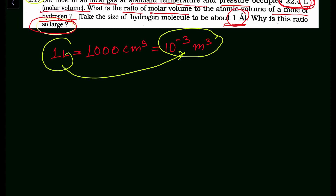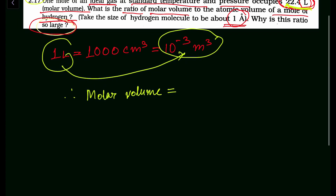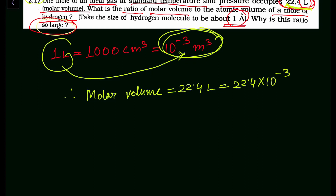We have to express the given molar volume of 22.4 liters in meter cube. Therefore, molar volume = 22.4 liters × 10⁻³, which gives us 22.4 × 10⁻³ meter cube. This is the molar volume of an ideal gas.